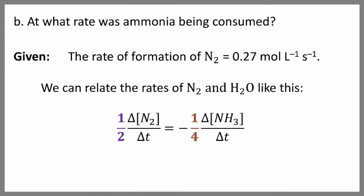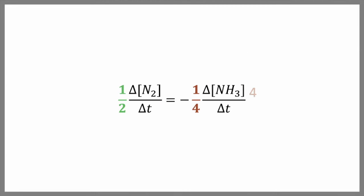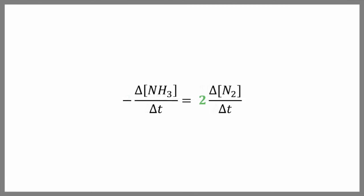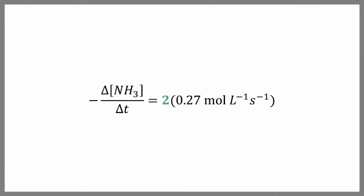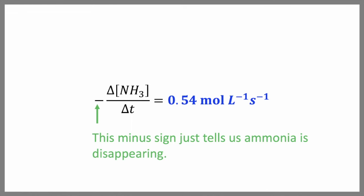We will use a little bit of algebraic manipulation. Then we will plug in our value for the rate of appearance of nitrogen, and we get 0.54 moles per liter per second. Remember, this minus sign just tells us ammonia is disappearing. But we know that our rate is positive because rates are positive.